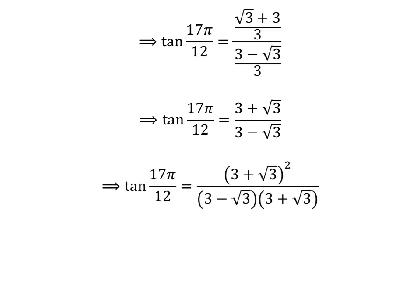Let us rationalize the fraction. Multiplying the numerator and the denominator by a common factor does not change the value of the fraction. So let us multiply the numerator and denominator by (3 plus square root of 3). We get tangent of 17 times pi upon 12 equal to (√3 + √3)² upon (3 minus √3) times (3 plus √3).